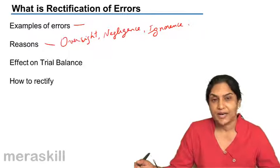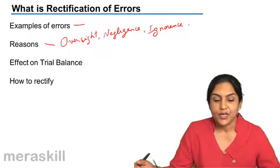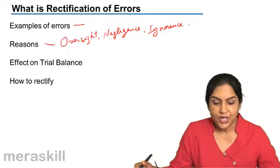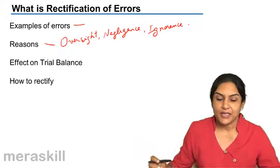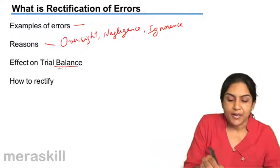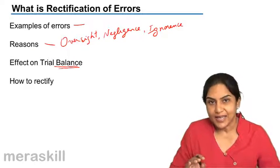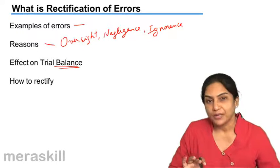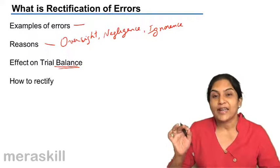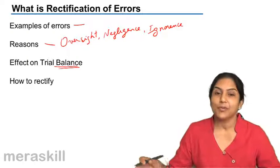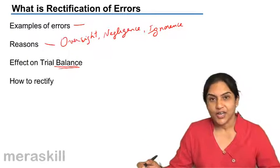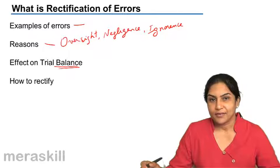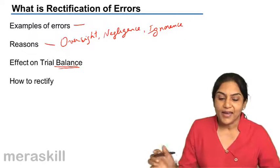Now, what happens when there are errors? Usually, when there are errors, how do we know that there are errors? We record in a journal, from the journal we post to the ledger, and from the ledger we take all the balances and put it in a statement called the trial balance. If the trial balance agrees, it tallies, we usually do not look further. We assume that there are no errors, though that may not necessarily be a fact. But when the trial balance does not tally, does not agree, we are certain that there is some error. We then try to find what are the errors and then go ahead and rectify.